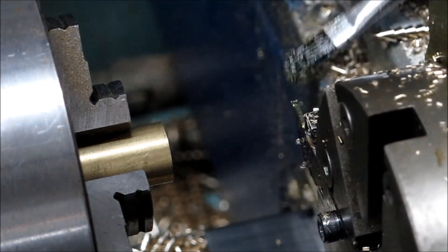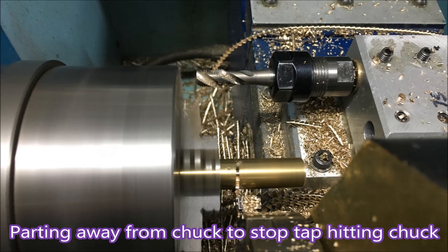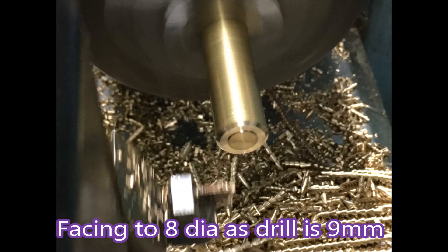And the reason that's so far out from the chuck for parting off is because the tap was getting very close to the chuck and we didn't want that to happen.